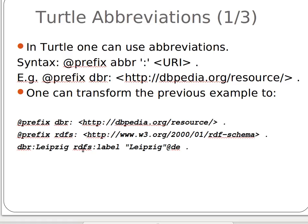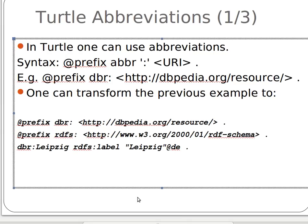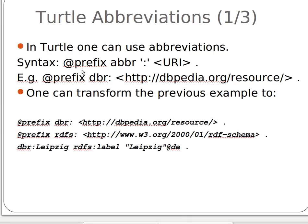Then 'rdfs:label' and the value is exactly the same. The idea is quite simple — these are just shortcuts, mainly for human readability.